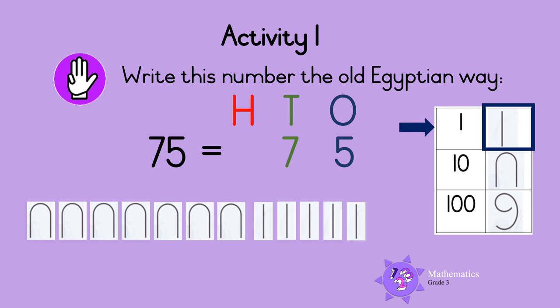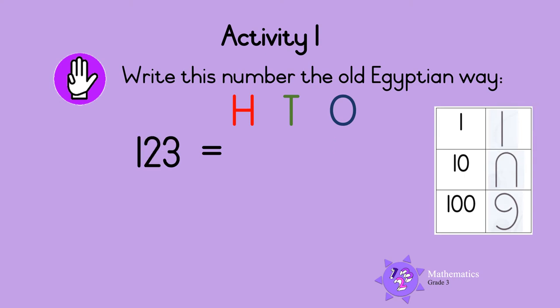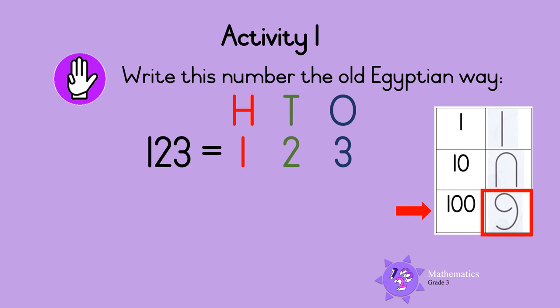What about this number? Write 123 in the old Egyptian way. Here is the symbol used for 100 in old Egyptian. We need one of these symbols to show 100.